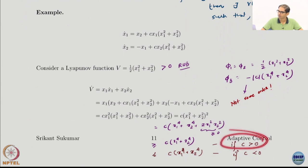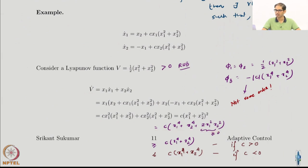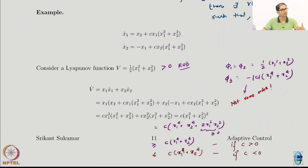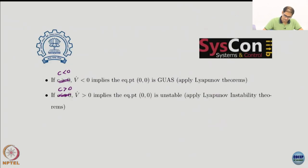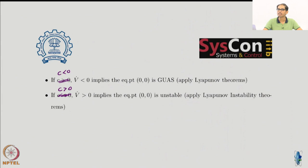What happens if c is positive? Then V-dot is actually positive definite. We have not yet done any instability results — we have just defined instability and mentioned that if the system is not stable it is unstable, but we have not given any theorems for instability. That is actually part of the assignment — there do exist instability theorems, and it does turn out that this system is unstable.